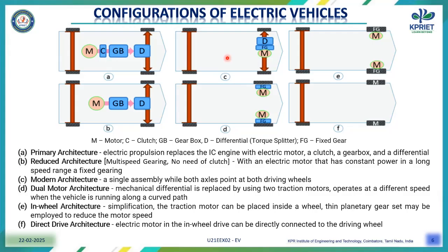In the C configuration (modern architecture), only one motor is used to operate both wheels. Architecture D is the dual motor architecture, where the mechanical differential is replaced by using two traction motors operating at different speeds. When the vehicle runs along a curved path, the speed difference can be varied during curve operation because two motors are connected to the two wheels.